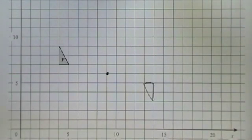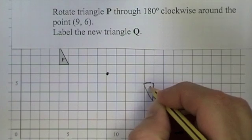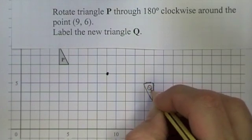And the question goes and says label a new triangle Q. So I'm going to put a Q either inside or by the side of that.